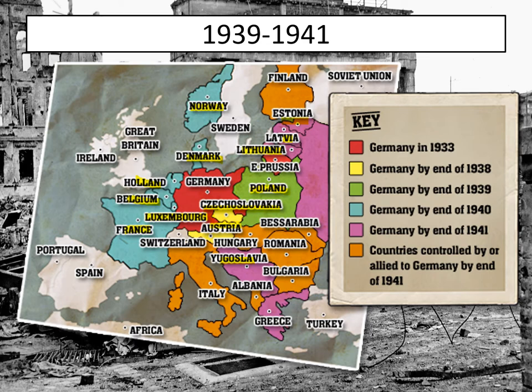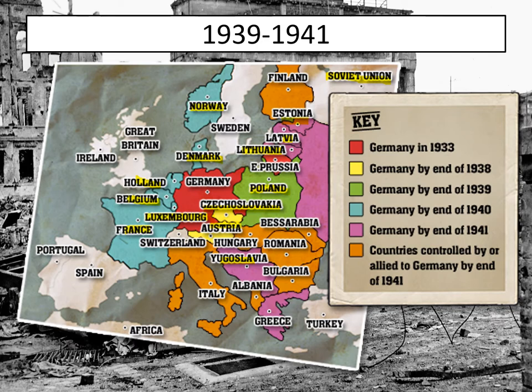Hitler then made two very bad decisions in 1941 that led to Germany losing the Second World War. First, he tried to invade the Soviet Union in June 1941 — and even though he was initially successful, the sheer size of Russia and the cold winters eventually defeated him at battles like Stalingrad. Then in December 1941, Hitler declared war on America after the Japanese bombing of Pearl Harbor. Both of those decisions were crucial to Germany's eventual defeat.